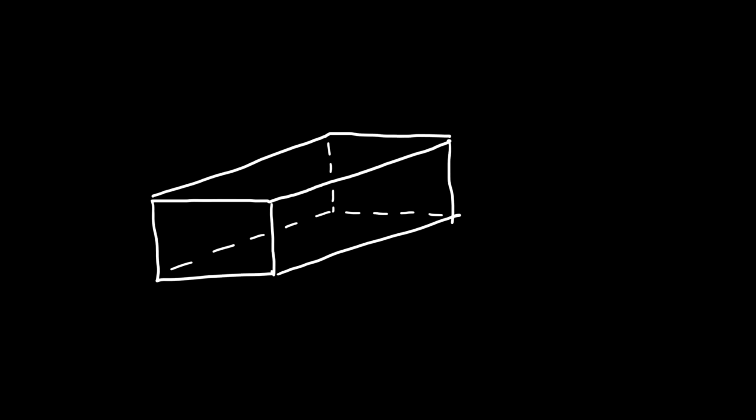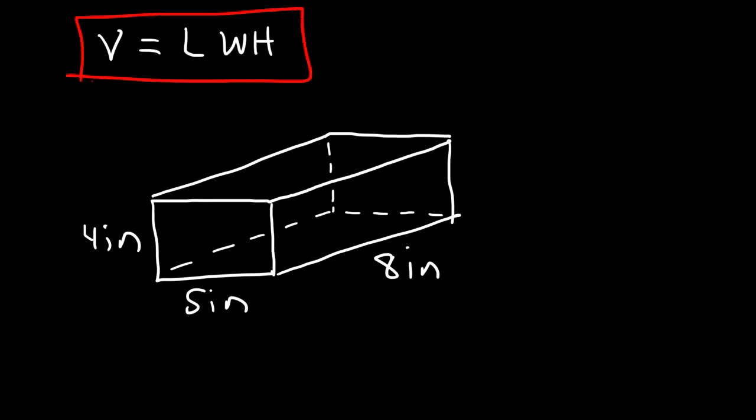Let's say if this side is 8 inches, this is 5 inches, and this is 4 inches. What is the volume of this rectangular prism? To calculate the volume, it's simply the length times the width times the height. You just need to multiply these three values and this will give the answer, so it's 4 times 5 times 8.